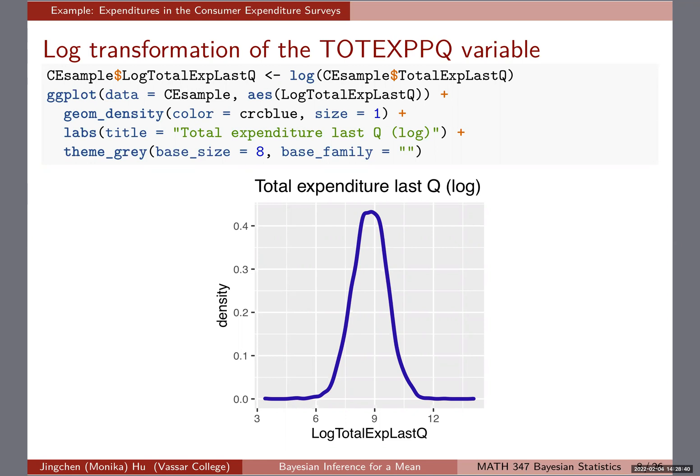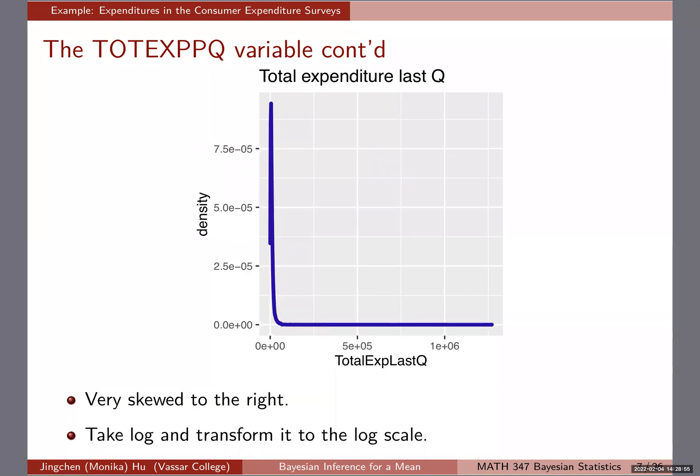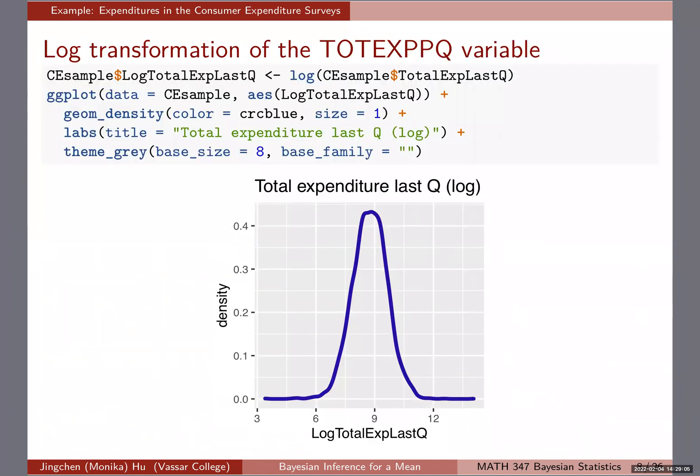In your previous classes, when you're trying to work with linear regression, for example, whether your predictor variables or the outcome variables, if they're too skewed, you probably want to do some kind of transformation. Log transformation is very popular and commonly used. In Bayesian inference, we actually also have to assume a data model for this variable.